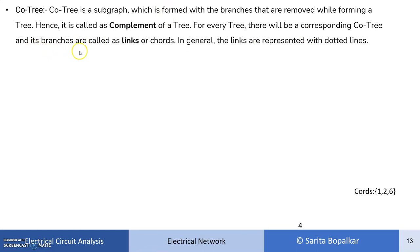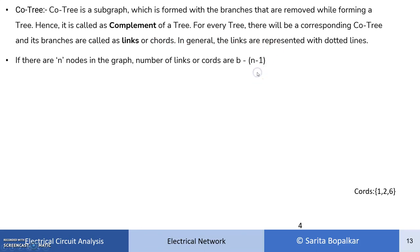The branches of a co-tree are called links or chords. In general, links are represented with dotted lines. If there are n nodes and b branches in a graph, the number of links or chords is b minus (n minus 1).